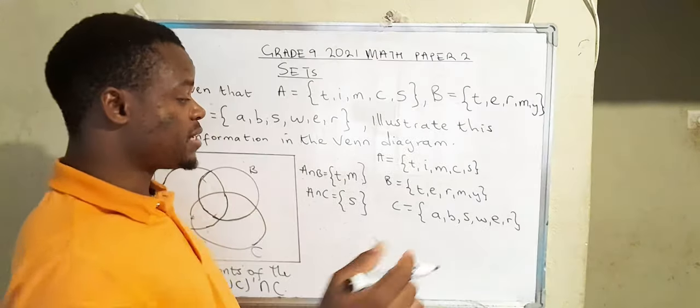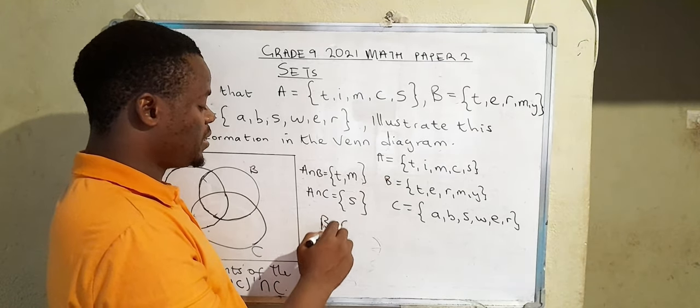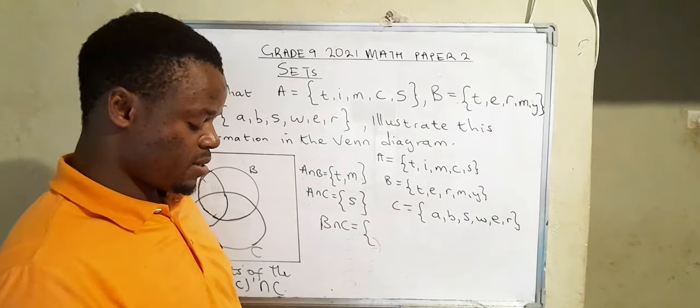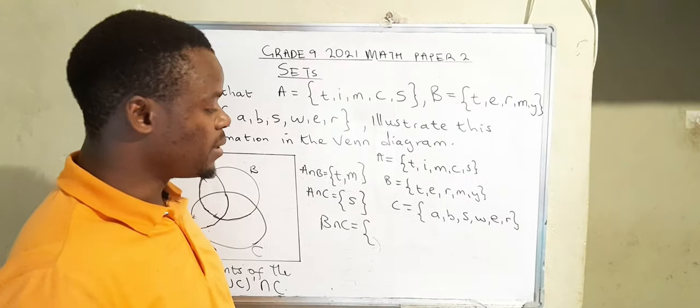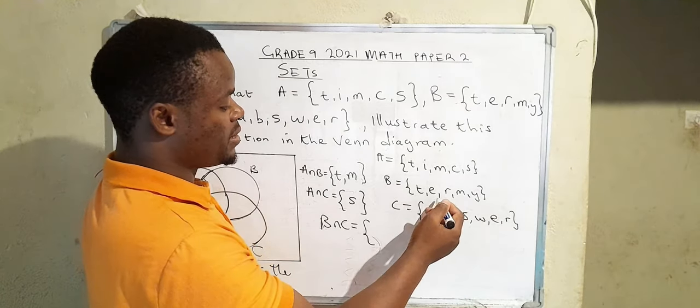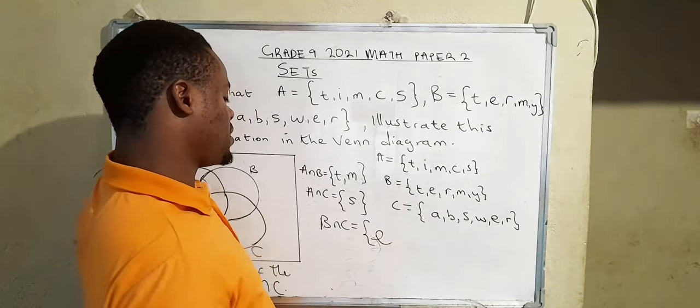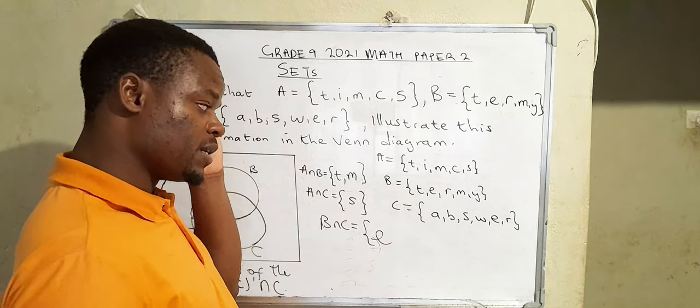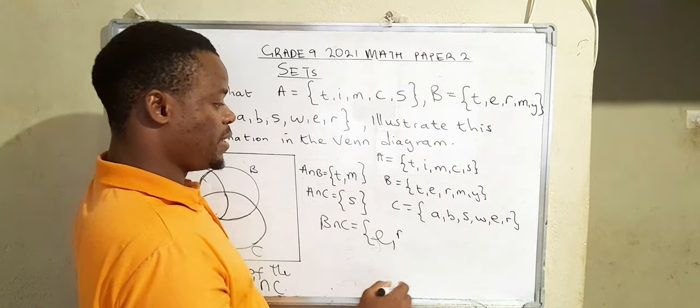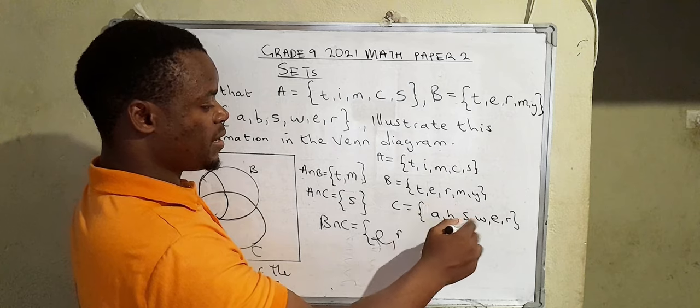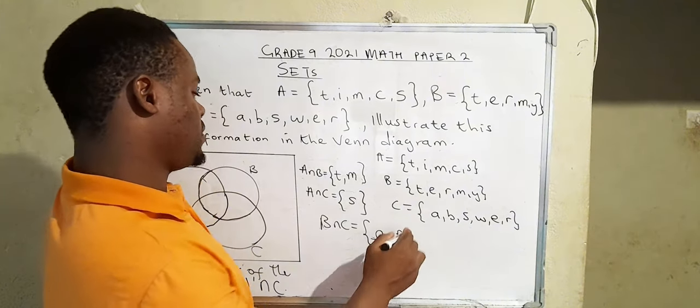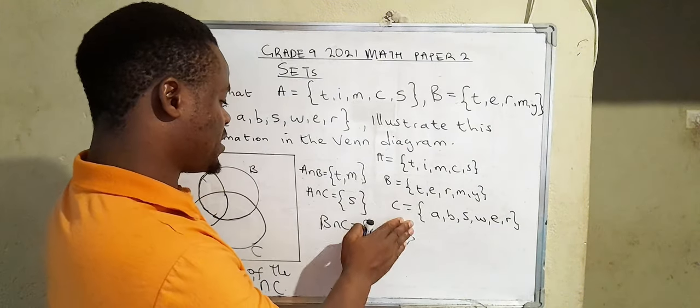Then the intersection set of B and C. So we write B∩C. So we check these two sets where we want to pick the common elements. T, we don't have T here. E is here. There's T, also E is common there. What else is common in these sets? R. And so that's all. So those are the common elements in these two sets.